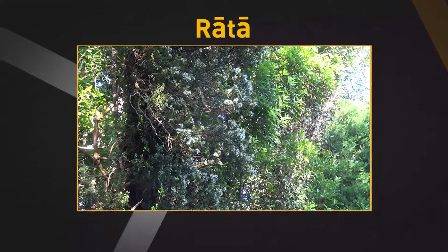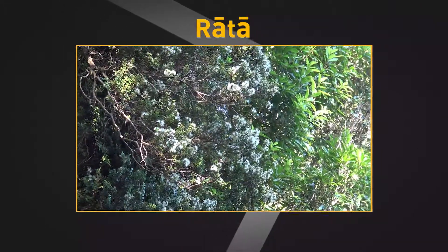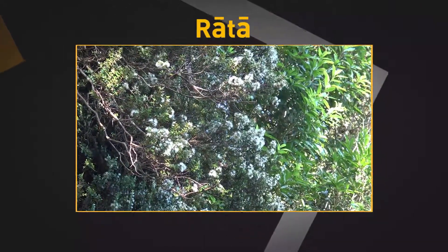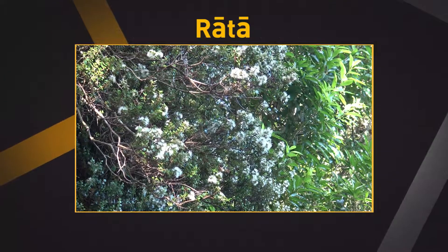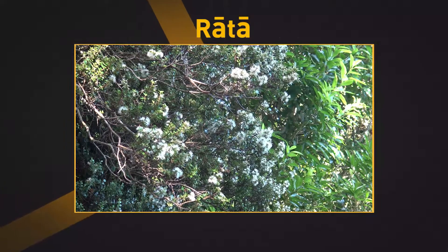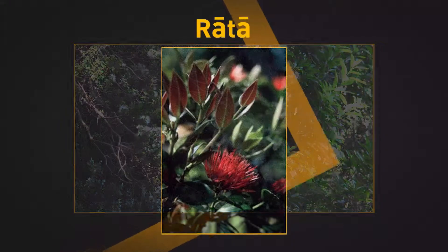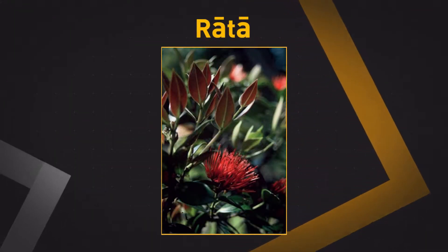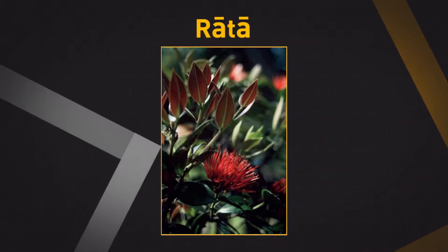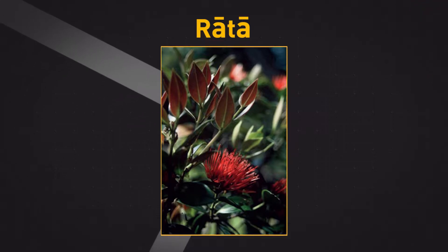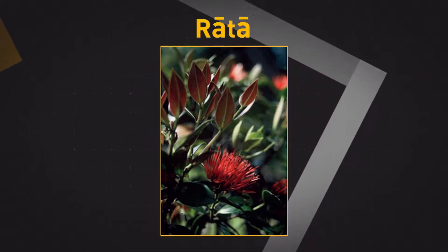Rata. Tall forest trees with pairs of oval leaves and masses of red brushy flowers in summer. The leaves are leathery, dark green and have a distinct notch in their tips. The red flowers are clustered, each with five petals. Native birds such as tui, bellbird and kaka all benefit from the presence of rata trees.